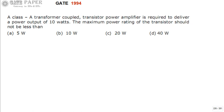We are discussing the GATE 1994 ECE paper, and this question is related to analog circuits. A Class A transformer coupled power amplifier is required to deliver a power output of 10 watts. The maximum power rating of the transistor should not be less than: a) 5 watts, b) 10 watts, c) 20 watts, d) 40 watts.